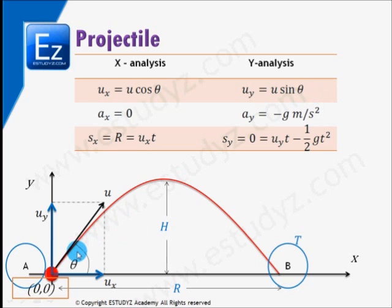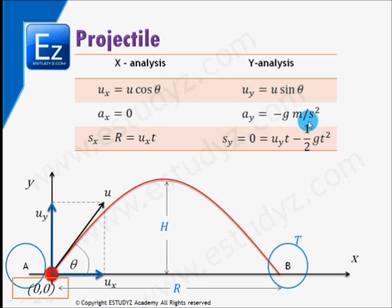We have found out the components of u along the x-axis and the y-axis. Ax equals 0 — there is no acceleration of the projectile along the x-axis. But the acceleration along the y-axis is minus g metres per second squared.